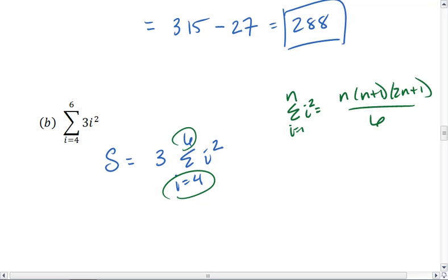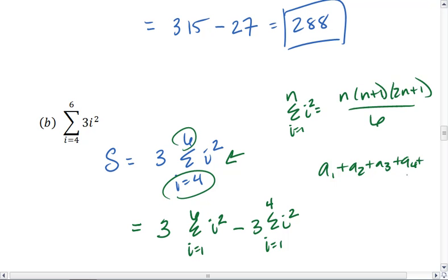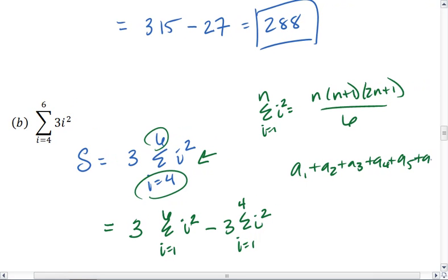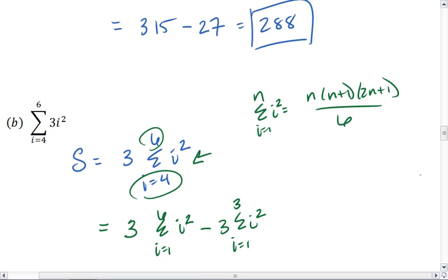To figure this out, I'm actually going to rewrite the sum here from 4 to 6 as the sum from 1 to 6 minus the sum from 1 to 3. So I know that with all of these terms, I only want to add the terms 4, 5, and 6. So what I'm going to do instead is add all 6 terms together and then subtract out the terms 1 through 3. And that will equal my sum from 4 to 6.